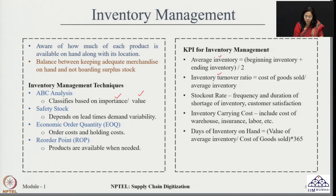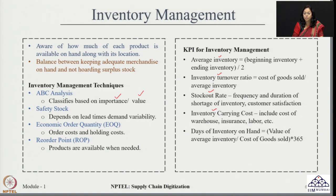The last technique is the reorder point, which ensures that products are available when they are needed. In line with this, there are different KPIs for inventory management. Some famous KPIs include average inventory — the average of beginning inventory and ending inventory — inventory turnover ratio calculated as cost of goods sold divided by average inventory, stock-out rate looking at the frequency and duration of inventory shortage, inventory carrying cost covering warehousing, insurance, and labor, and days of inventory on hand which is average inventory divided by cost of goods sold for 365 days.